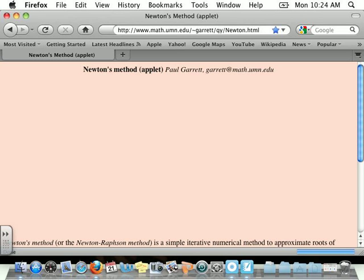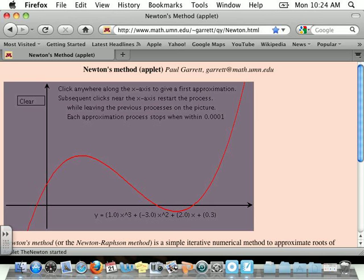Okay, so what this applet's going to do is it's going to show you the initial guess. And then it's going to go up to the curve, draw the tangent line in. It's going to use that intersection with the x-axis and that tangent line as your next guess, and so on.